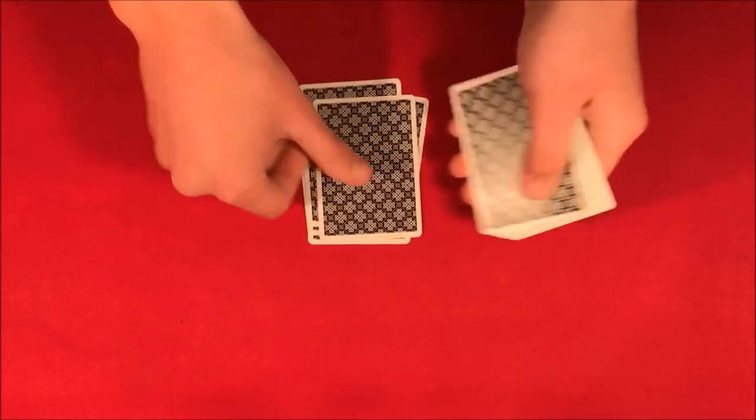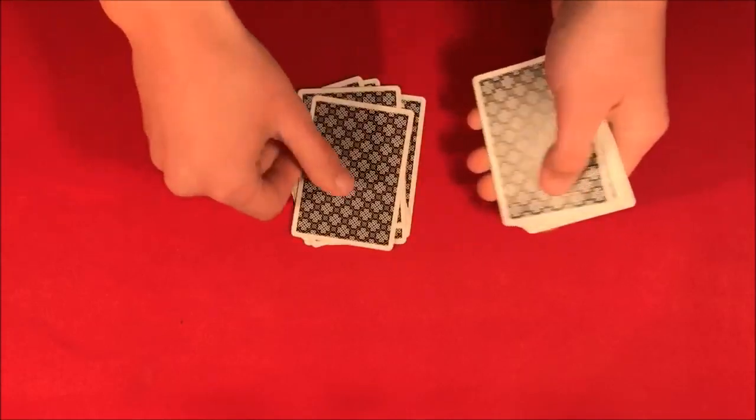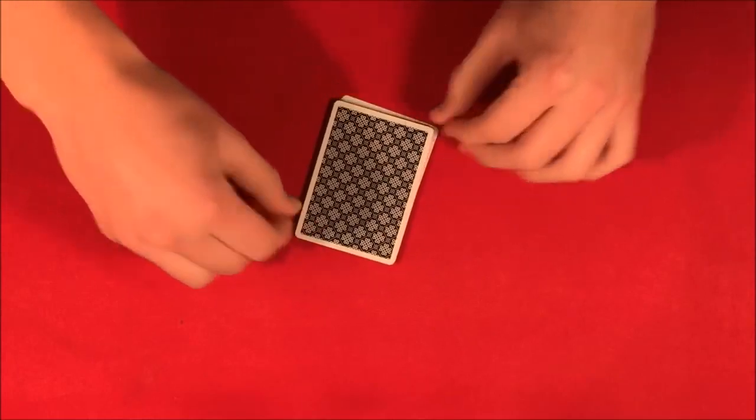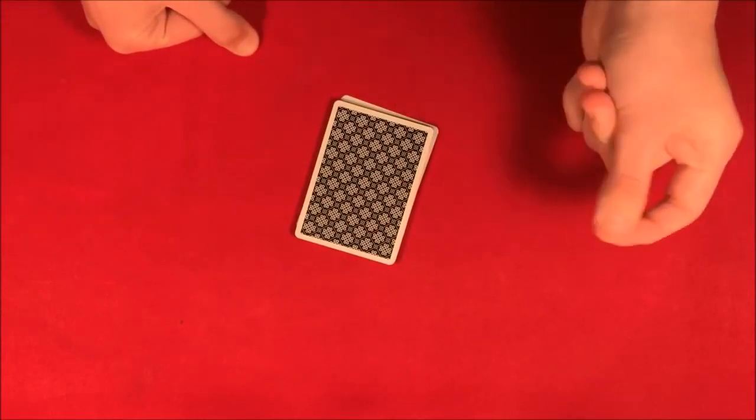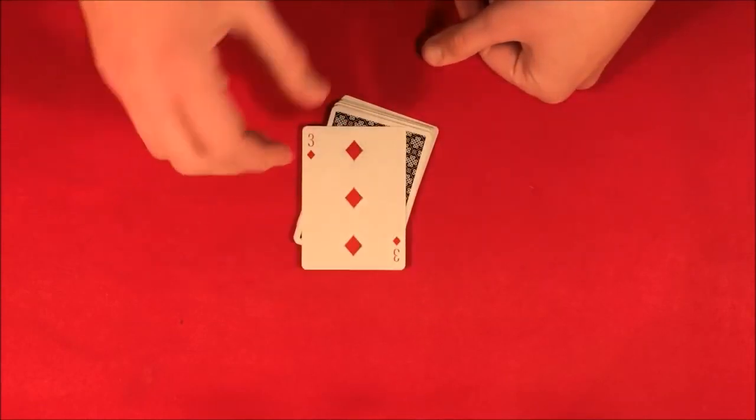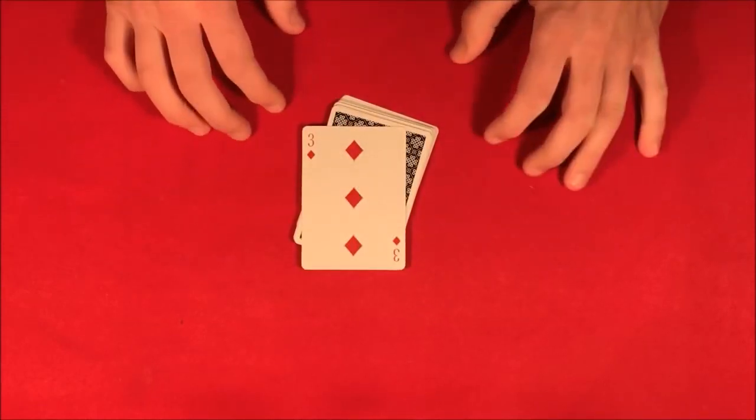Now guys, the card that you should have stopped me at from the shuffled deck was the three of diamonds. So if I snap my fingers, we're gonna have the three pop up just like this. So this is the trick guys, and if you want to do it, don't forget to stick around for the tutorial.